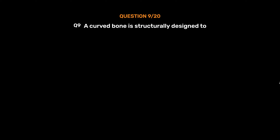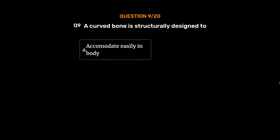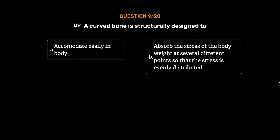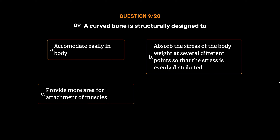Question No. 9. A curved bone is structurally designed to: Option A. Accommodate easily in body, Option B. Absorb the stress of the body weight at several different points so that the stress is evenly distributed, Option C. Provide more area for attachment of muscles, Option D. All the above. The correct answer is Option B.